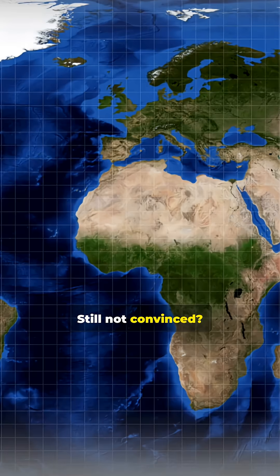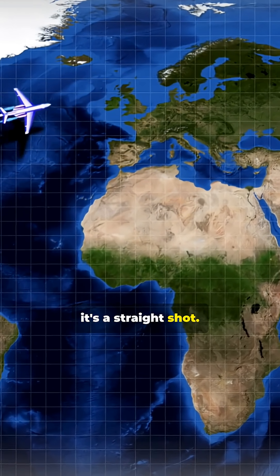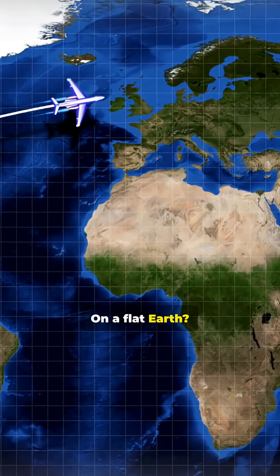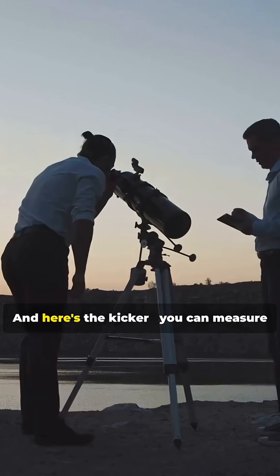Still not convinced? Fly from Santiago to Sydney. On a globe, it's a straight shot. On a flat Earth, you'd need a refueling stop in Narnia. And here's the kicker.